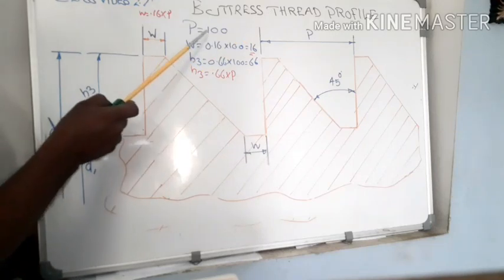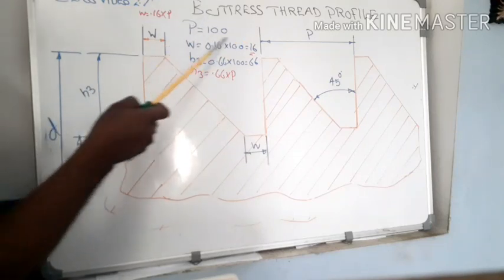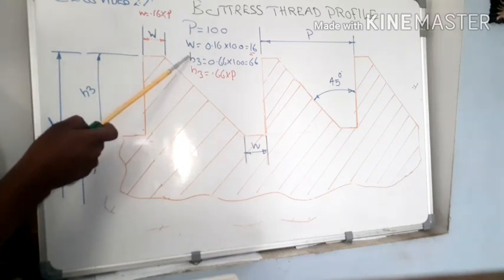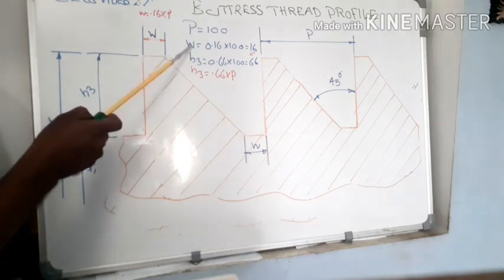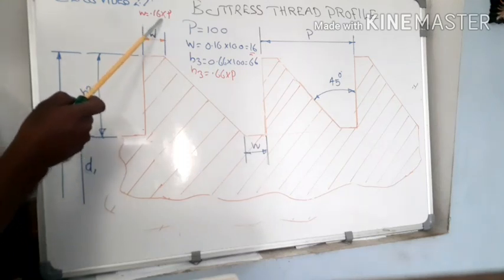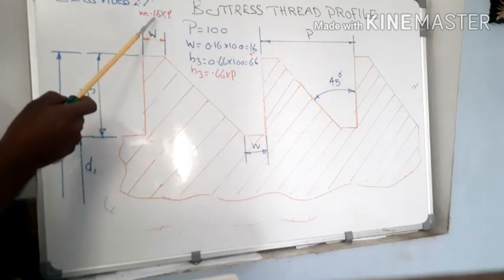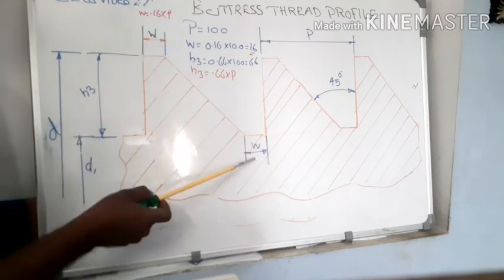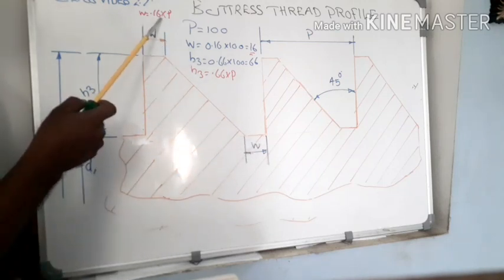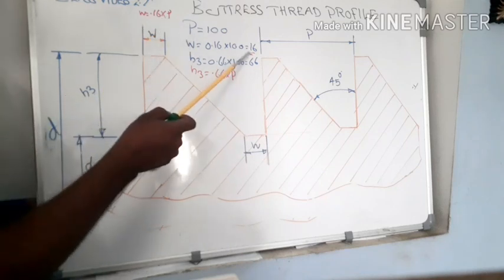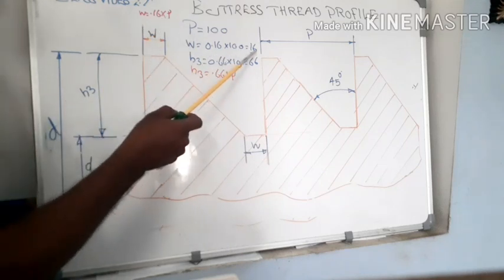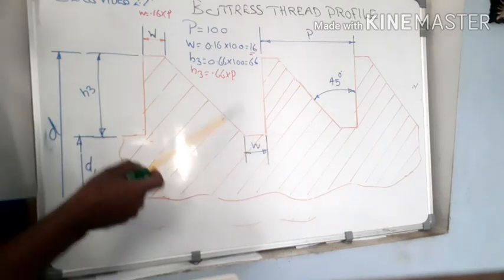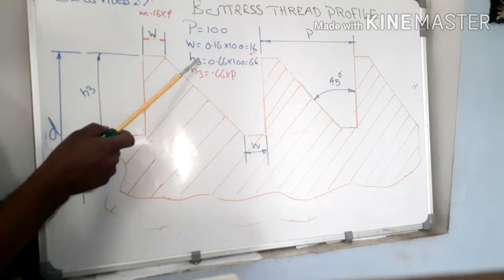By using this parameter, we have to find out other data. Our main data are width and depth of thread. Width is marked here - that value is 0.16 into pitch. That is 0.16 into 100 equals 16 mm. That means this distance is 16 mm, and this distance also 16 mm.